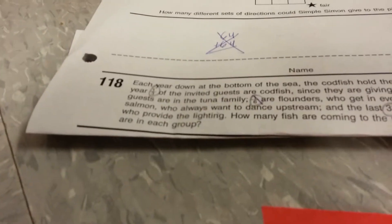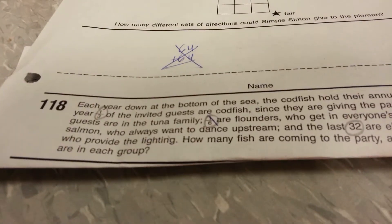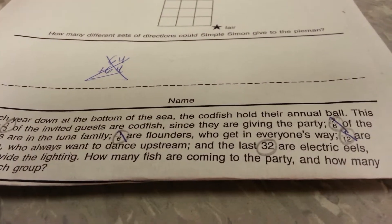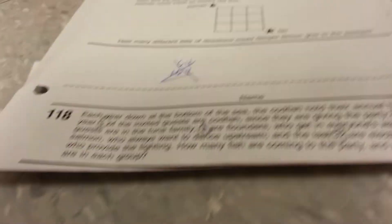Each year, down at the bottom of the sea, the codfish hold their annual ball. This year, one-third of the invited guests are codfish since they're giving the party. Two-sixths are the guests who are in the tuna family.